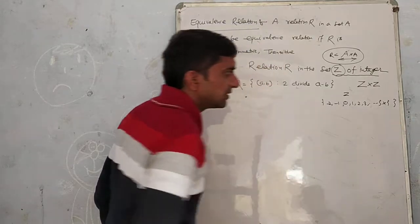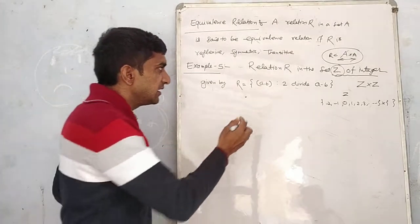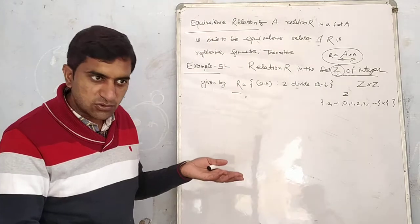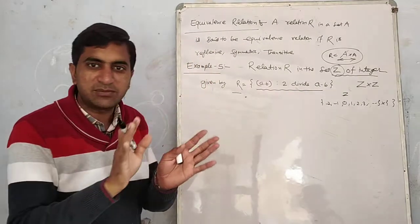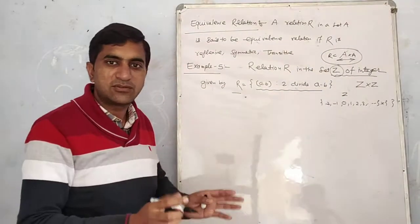Z cross Z is very big. But you know that the relationship is a subset of Z cross Z. So this condition should be useful for the subset. The ordered pair, we can verify it. That's the relationship.